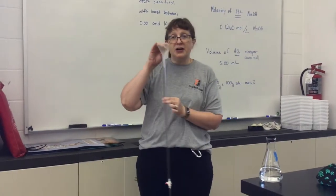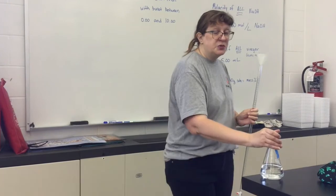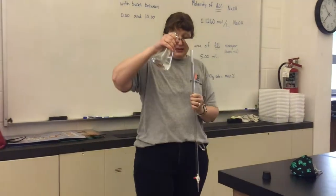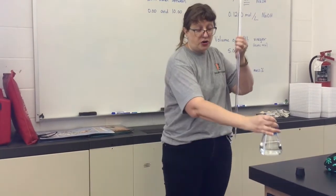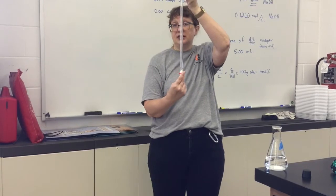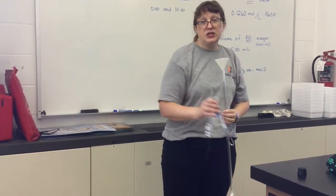Place a funnel in the top of the burette and then just put a few milliliters from your flask into the burette. Before you pour, you're going to want to make sure that that stopcock is closed. It needs to be horizontal. It's best to do this over a sink.